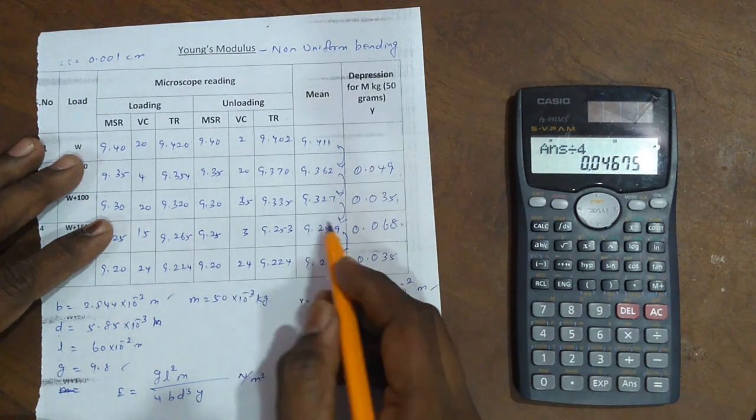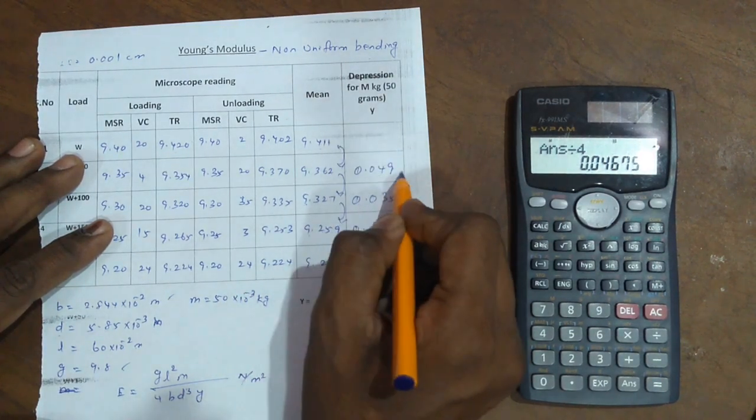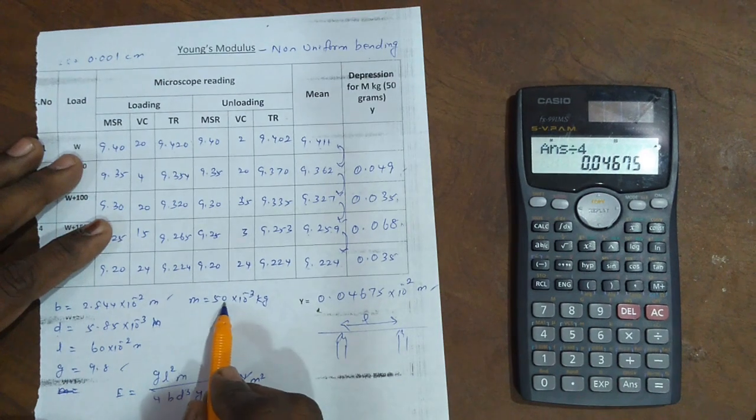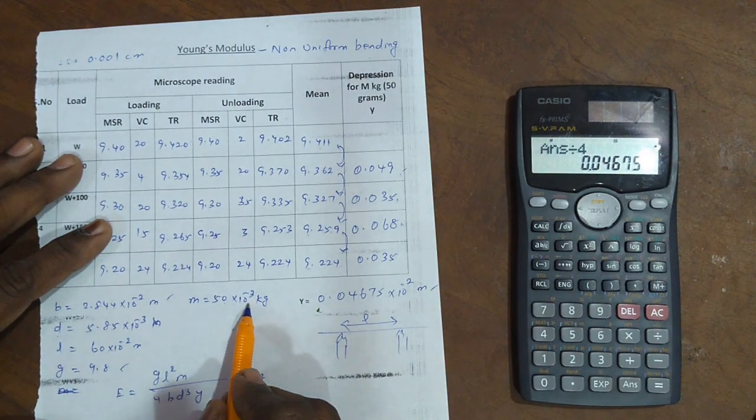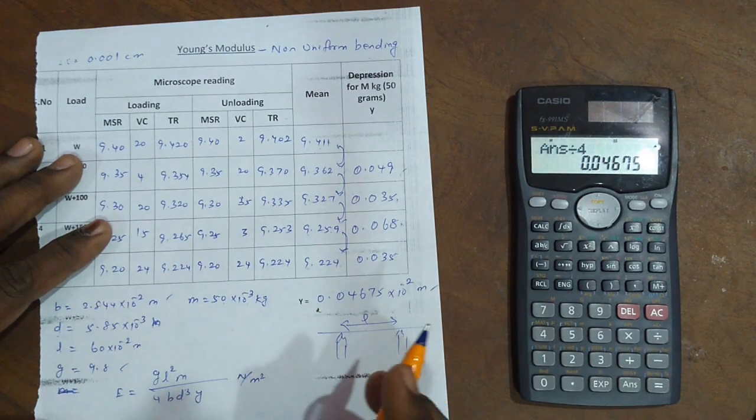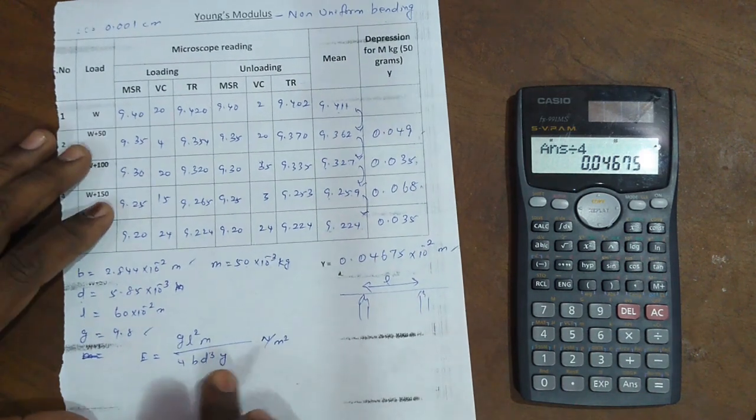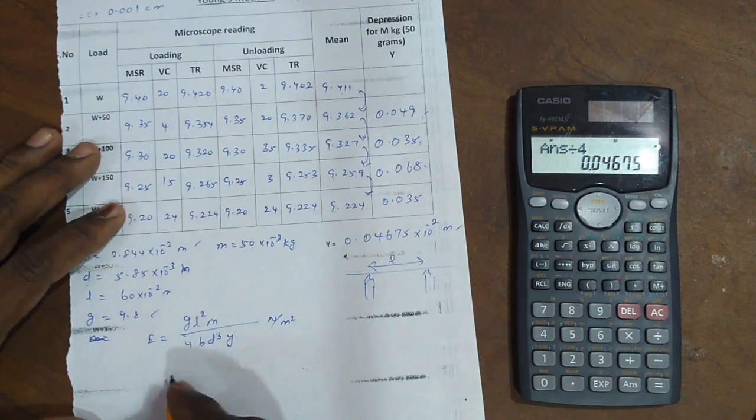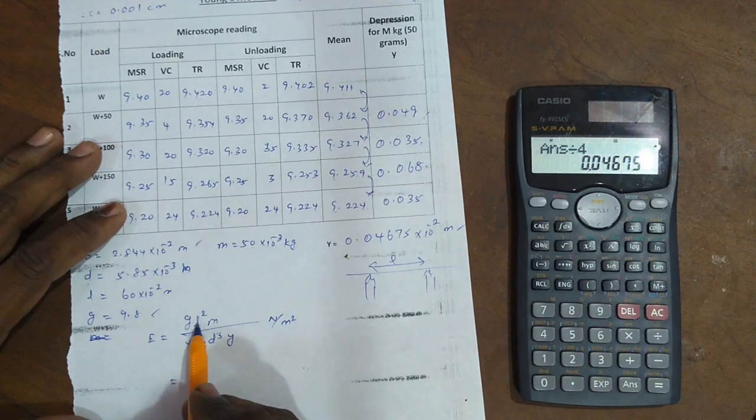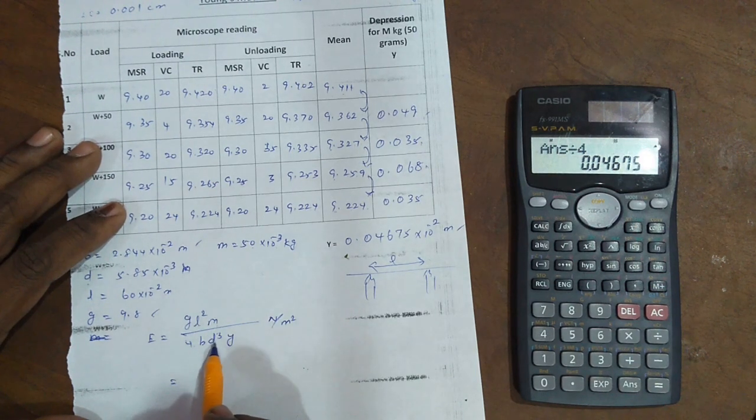Then depression for m kgs, for 50 grams. So m is equal to 50, converted to grams: 10 to the power minus 3 kgs. These values are substituting in the given formula. The Young's modulus non-uniform bending formula: g l squared m divided by 4 b d cubed y.